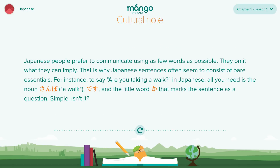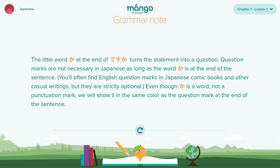Both cultural notes and grammar notes are integrated into each lesson and chapter. The little word 'ka' at the end of 'desu ka' turns the statement into a question. These notes provide you with insight into local customs and proper etiquette, as well as language context and usage.